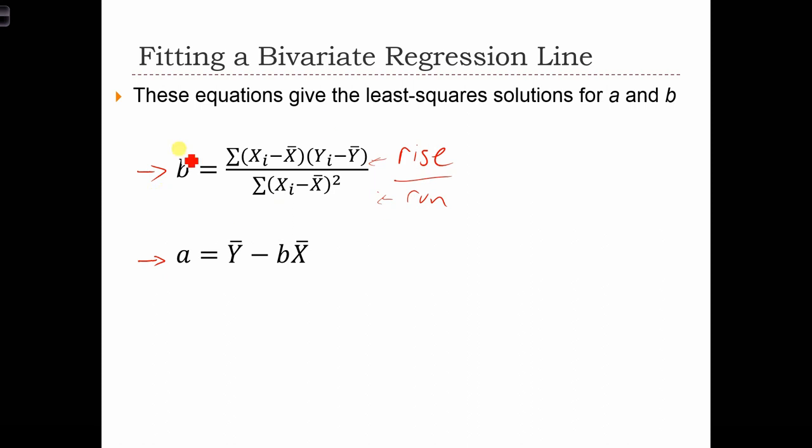Once we have our estimate of B worked out, then we can use that in our equation for the constant. And the constant here is equal to Y bar, that's just the mean Y value in our sample, minus B times X bar. So we're using this B over here, plugging it in over here. Y bar and X bar are just going to be calculated from our sample data.